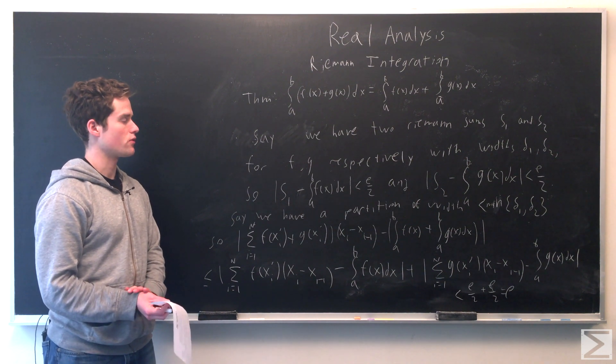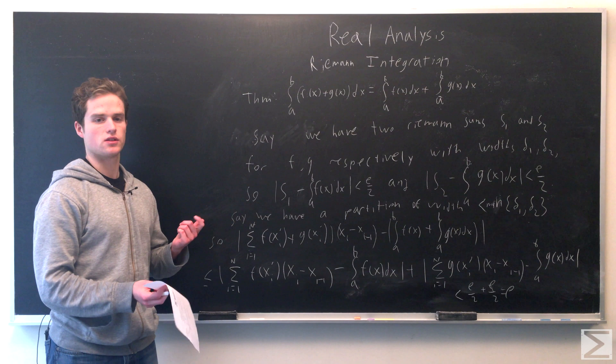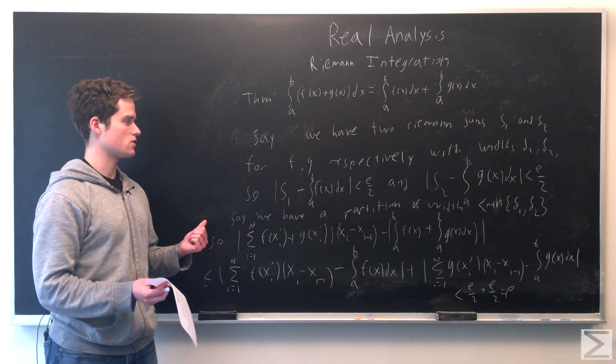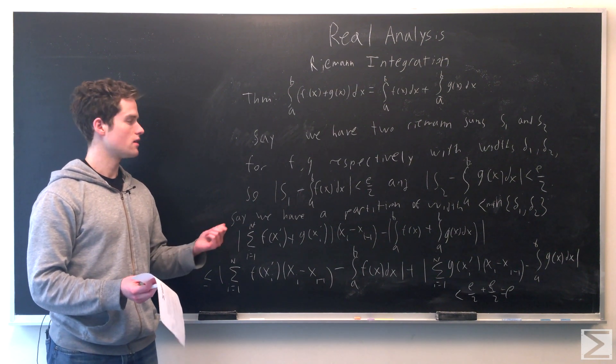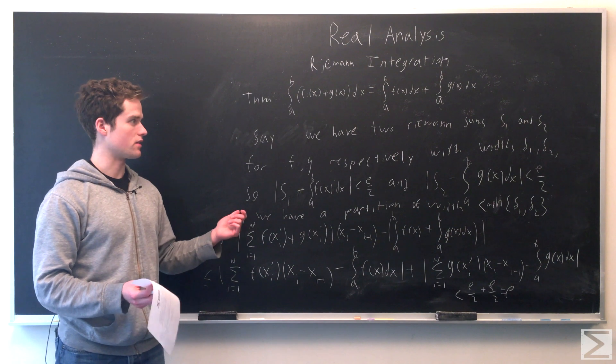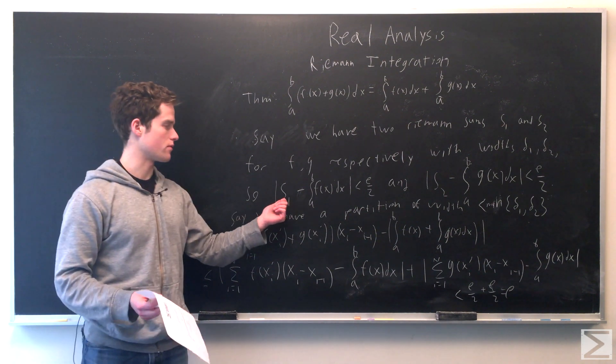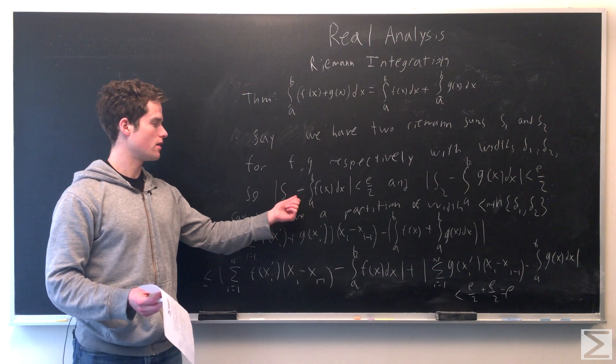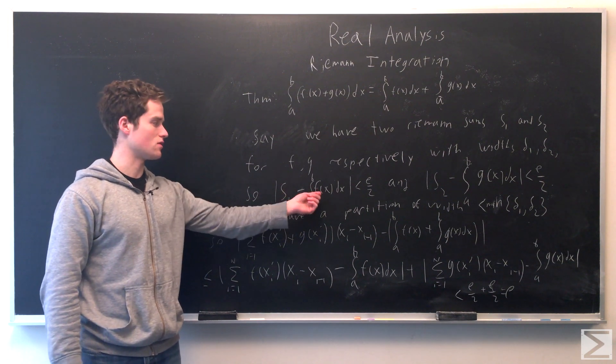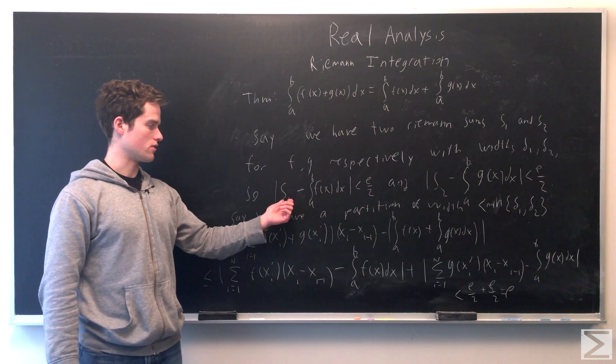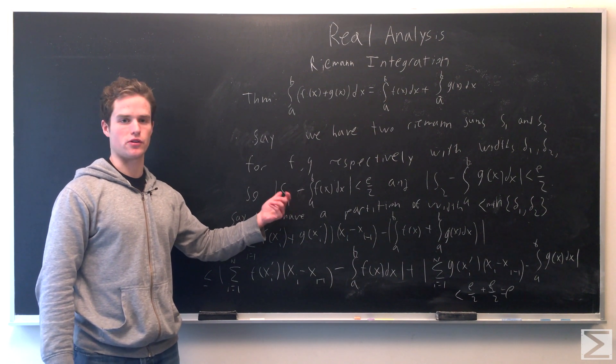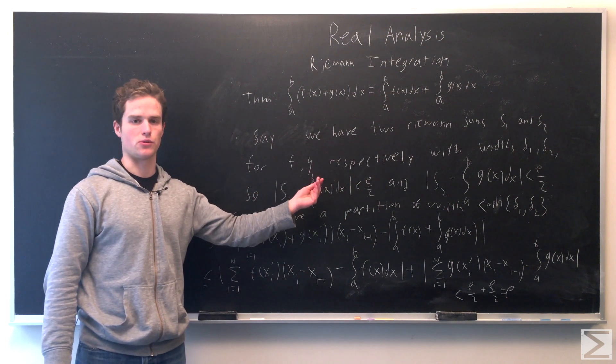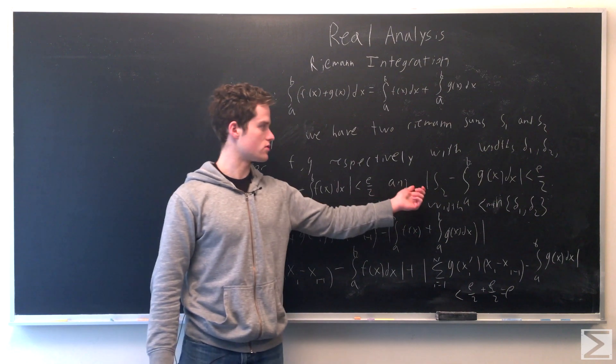To do this, first we're going to choose two partitions and Riemann sums for f and g respectively. We're going to have widths δ₁ and δ₂ such that for a partition with width less than δ₁ and δ₂, the sum S₁ for some partition with width less than δ₁, |S₁ - ∫ₐᵇ f(x)dx| is going to be less than ε/2. We know this because f(x) is Riemann integrable, so for some Riemann sum referring to a partition less than δ₁, this will be less than ε/2 for ε, any real number greater than 0. We do the same thing for g(x).